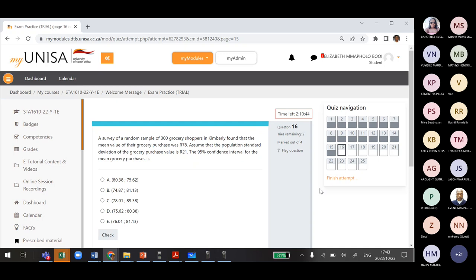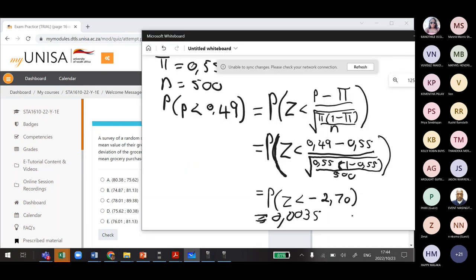The 95% confidence interval for the mean grocery purchase is... so we are looking at confidence interval questions. And because they're talking about the standard deviation, we need to ask ourselves, is the population standard deviation known? So I'm going to go to the table because that will tell us where on the table we are going to find...